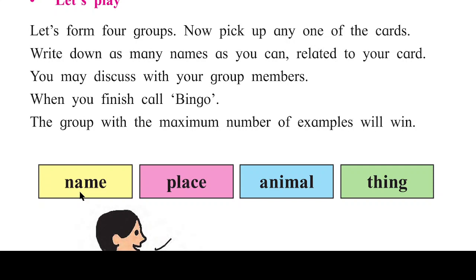For example, the first card is Name — so you write names of people, like Raghav, Preeti, Guru, Ranjana, or Saraswati. Place means the name of a location — koi jagah ka naam — like Delhi, Calcutta, Ahmedabad, Aurangabad.